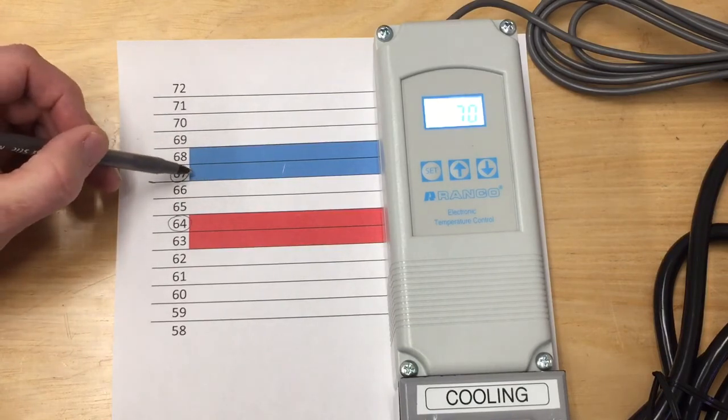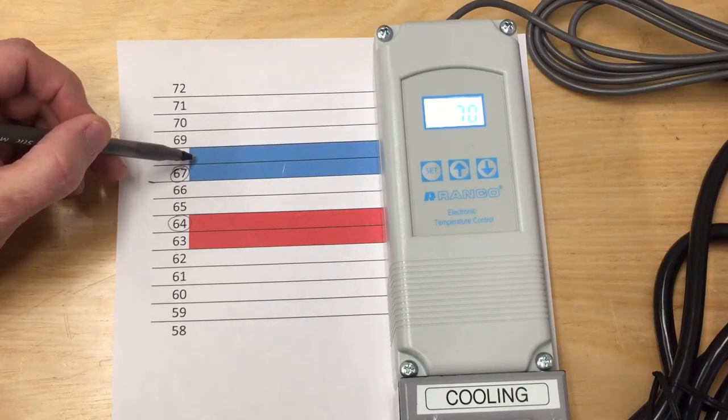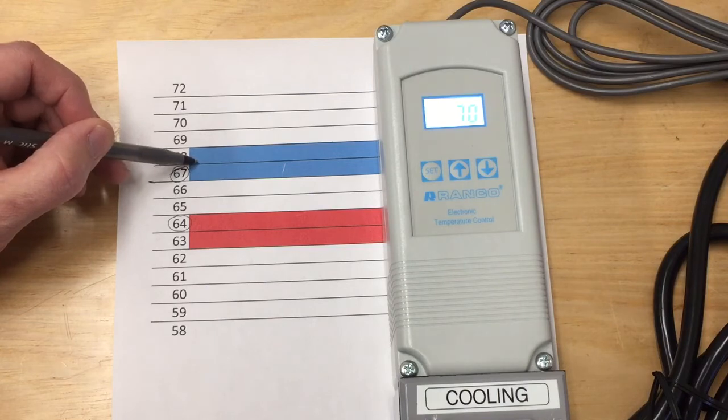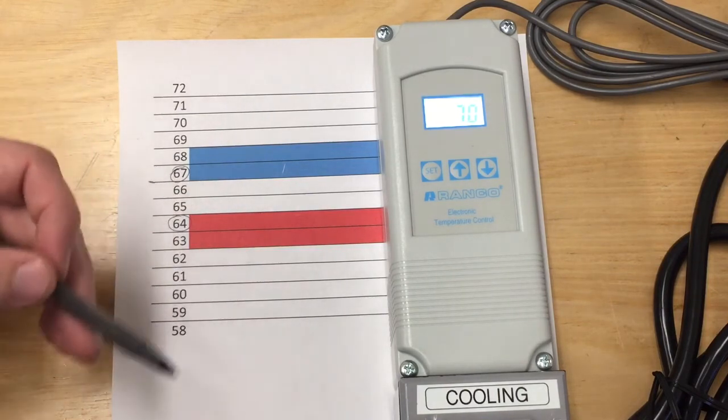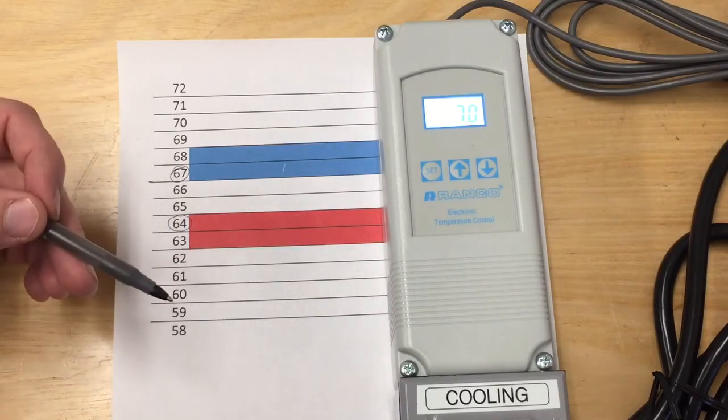A one degree differential at 67 would turn the refrigerator on at 68 and then off as soon as it's back to 67. That can cause a lot of cycling and issues with compressors.